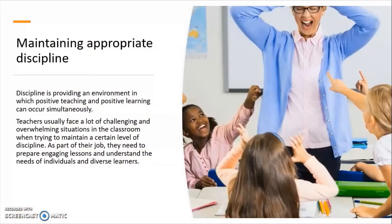Maintaining appropriate discipline. Discipline is providing an environment in which positive teaching and positive learning can occur simultaneously. Discipline is not controlled from the outside — it's order from within. Teachers usually face a lot of challenging and overwhelming situations in the classroom trying to maintain a certain level of discipline. As part of their job, they need to prepare engaging lessons and understand the needs of individuals and diverse learners. With a classroom of 20 to 25 students at least, this can amount to quite a lot of work for the teacher. But if done right, with the correct methodologies, proper order can be achieved in the typical classroom setting.